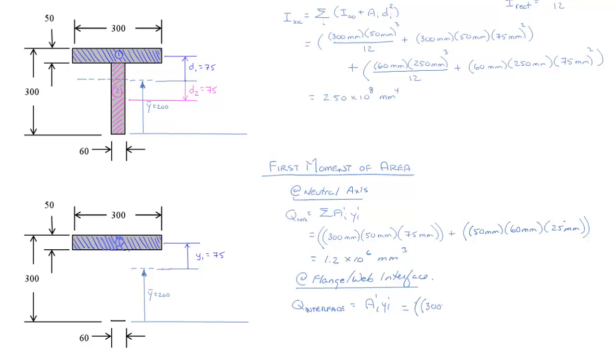It's area, 300 millimeters, 50 millimeters. And it is still the distance between its centroid and the centroid of the composite section. So that doesn't change. That's 75 millimeters. And with that, we calculate that. And we get 1.125 times 10 to the 6th millimeters cubed.